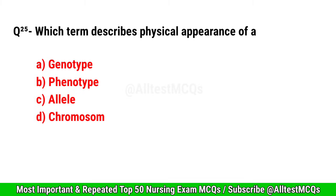Question No. 25. Which term describes the physical appearance of a trait? Correct option is B. Phenotype.